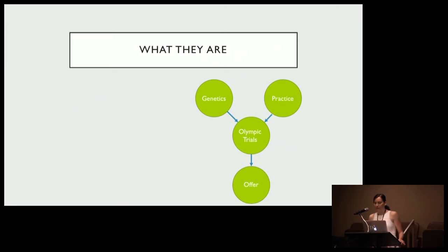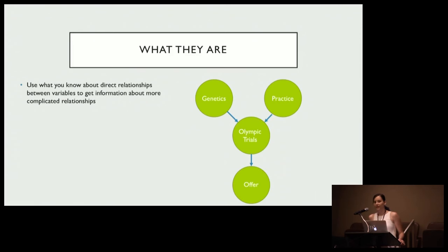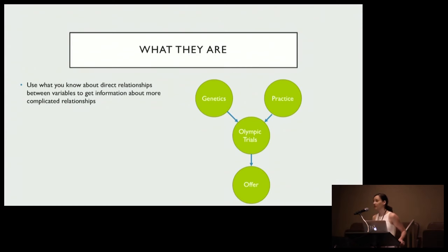So I just drew out a graph — what do I do with that? Firstly, you're going to use what you know about direct relationships between variables to get information about more complicated relationships. If you think about writing this out as a joint probability distribution of all four variables — genetics, practice, Olympic trial outcome, and whether you get an offer — that's pretty complicated. What I've done is substituted that one complicated function with, if we count the arrows, three much simpler, more intuitive relationships.